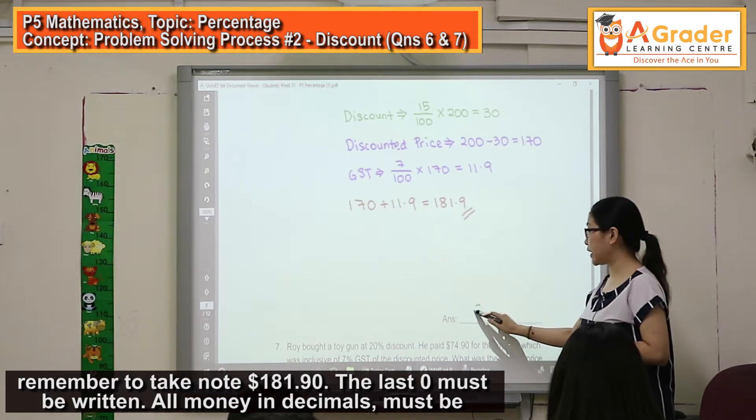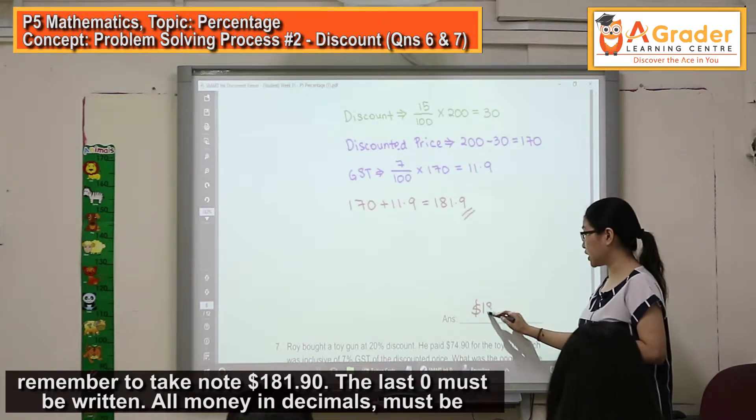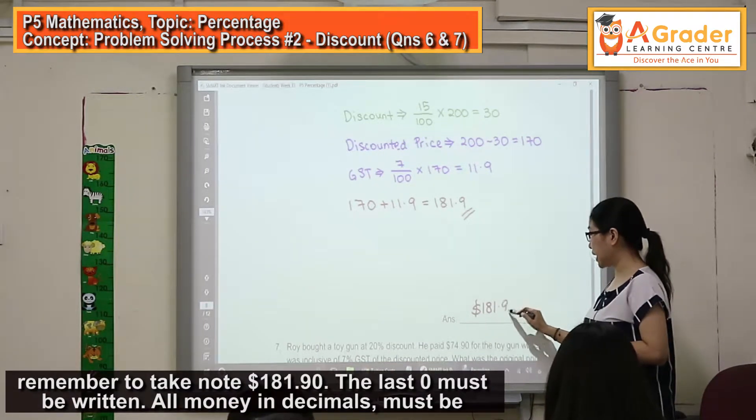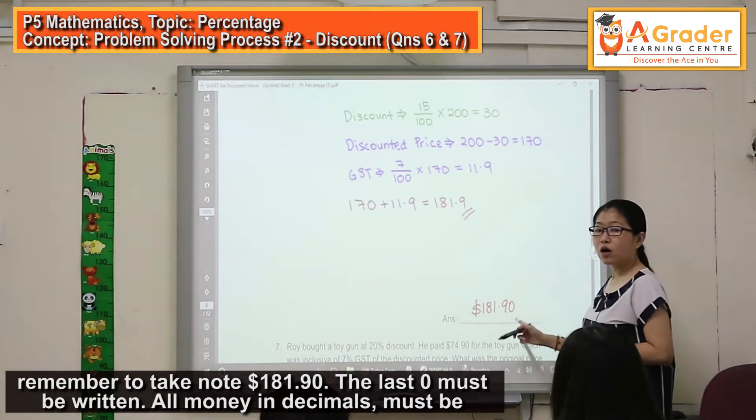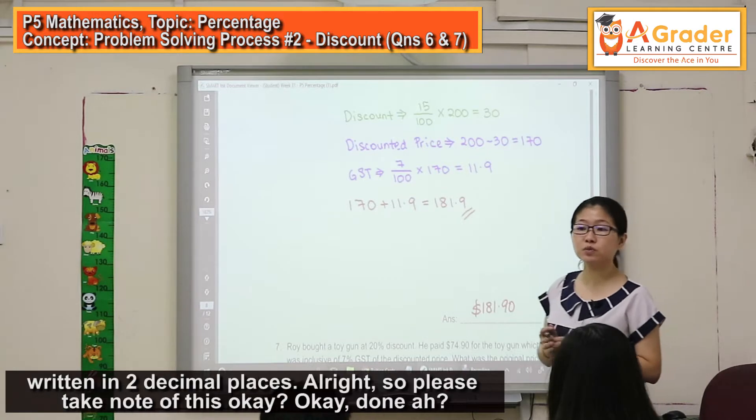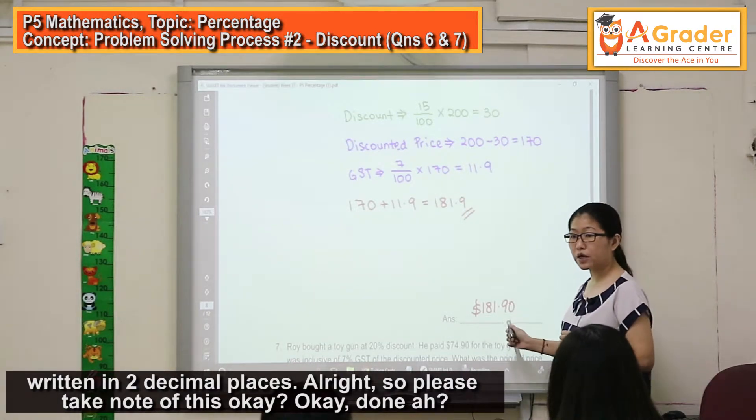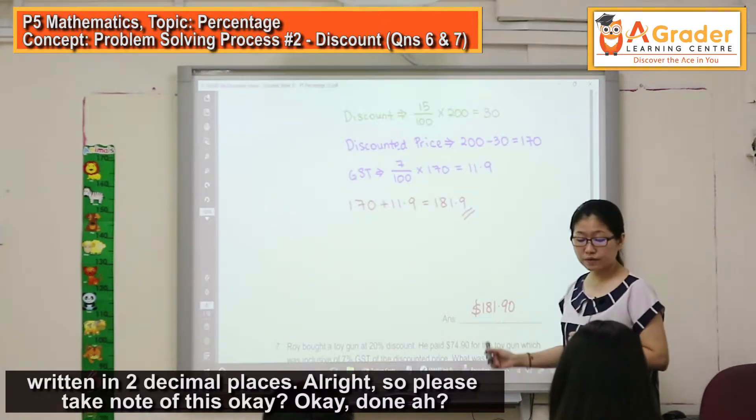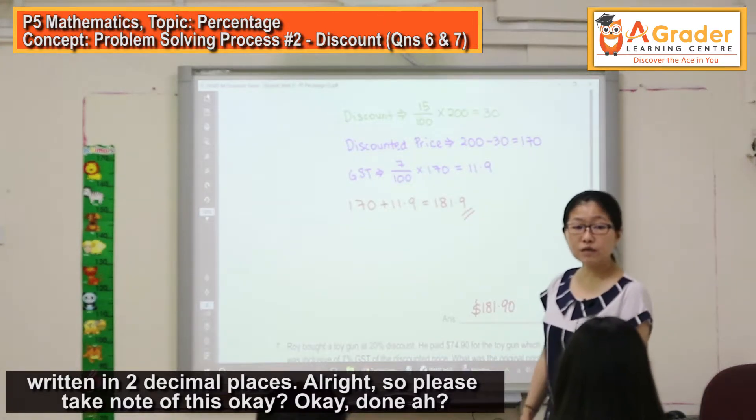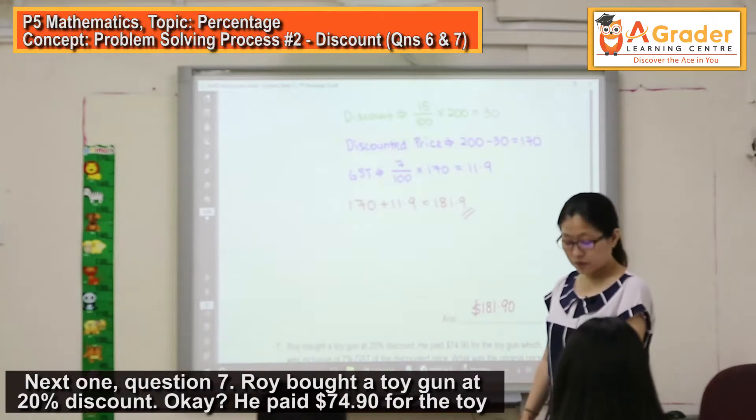But when you put it on the blank, please take note, $181.9. The last zero must be written. All money in decimals must be written in two decimal places. So, please take note of this. Done. Next one, Question seven.